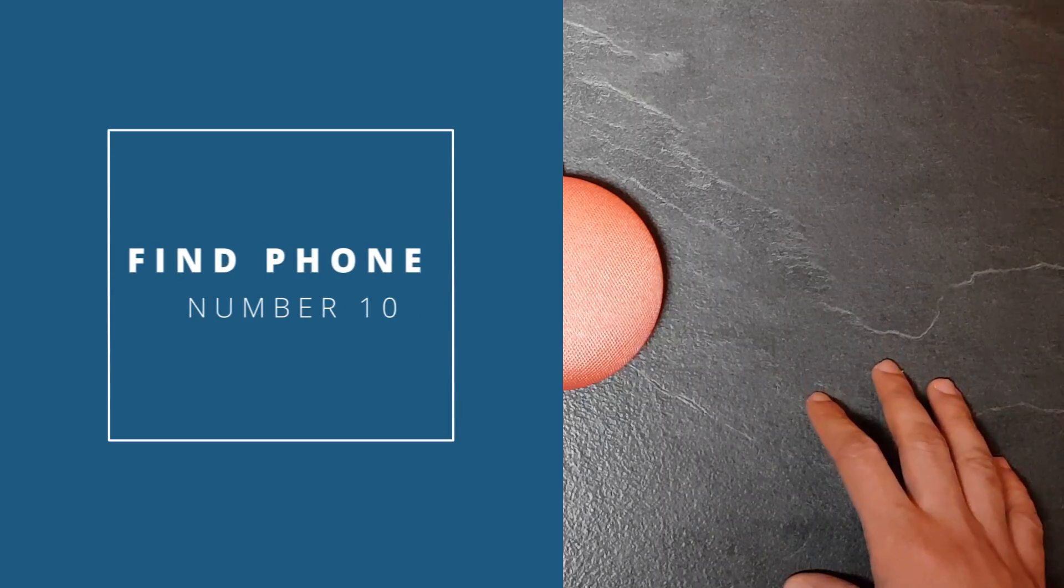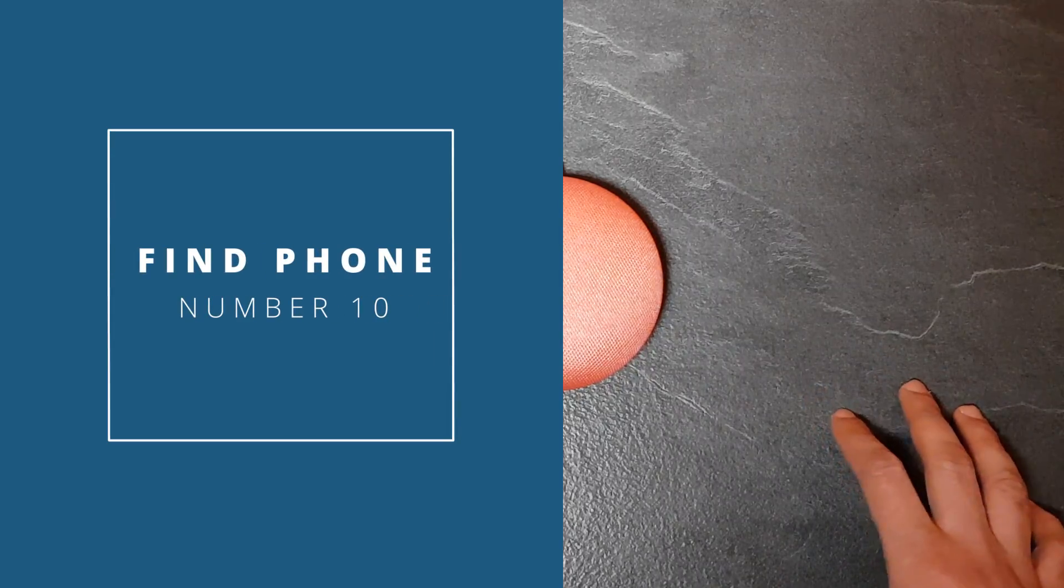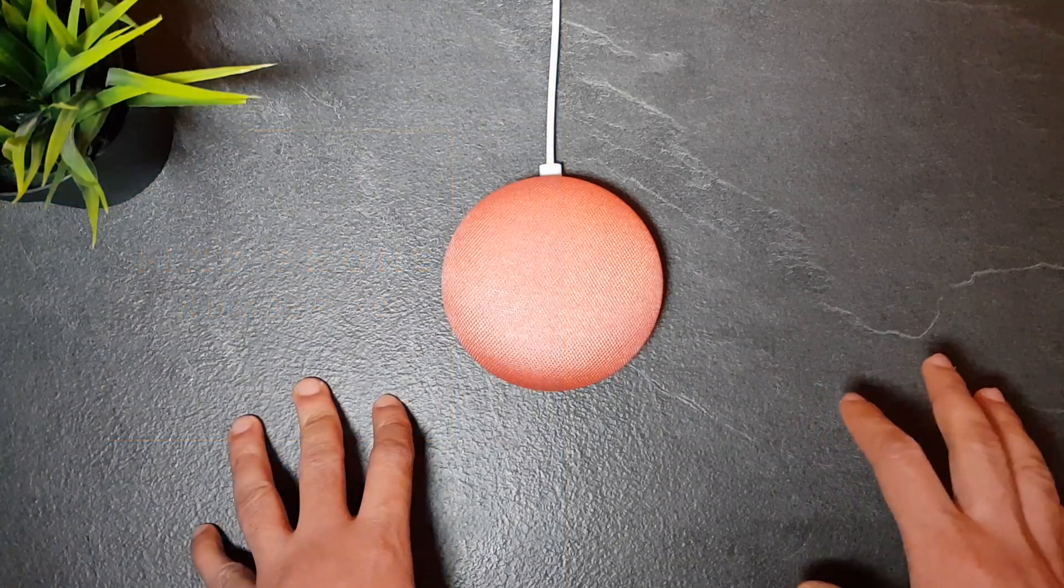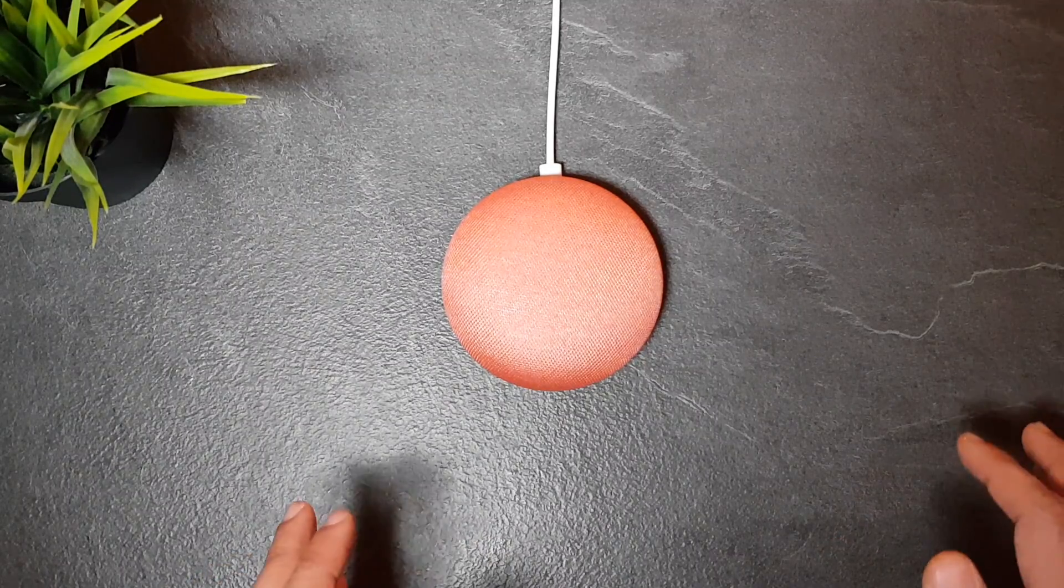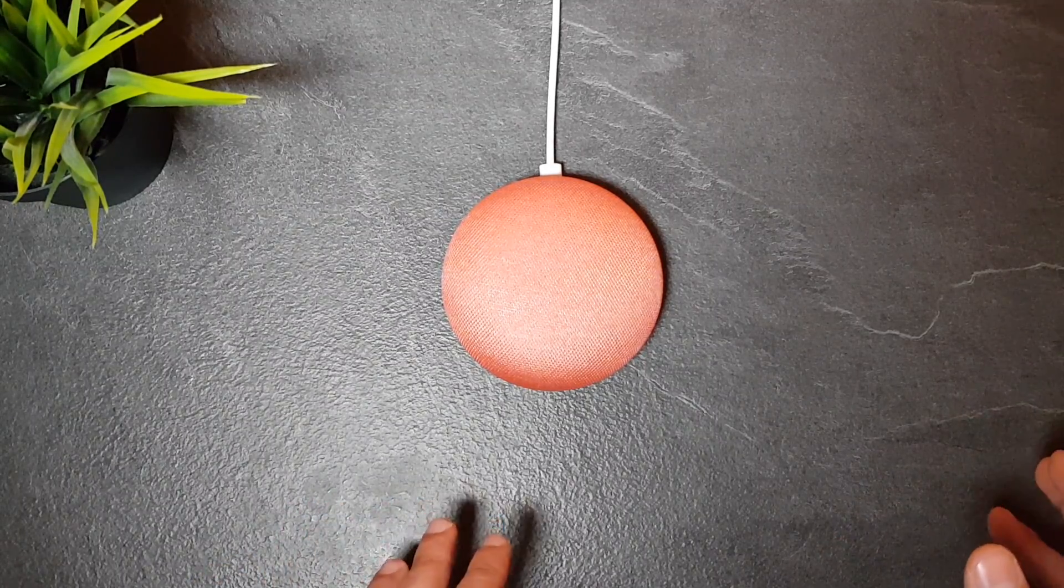And the last one might be a basic feature but not everybody knows it. Actually if you cannot find your phone inside your house, the Home Mini can do it for you. You can just say 'find my phone' and then the Mini will ring your phone at max volume even if it is silent. For this to work your phone needs to be connected to the internet and of course on the same Google account as your Google Home device.